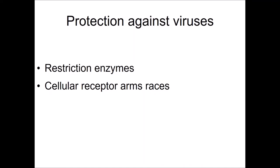Bacterial cells have protection against viruses. These include restriction enzymes, which we'll talk about later in the semester, as well as cellular receptor arms races, where the bacteria tries to hide from the virus and the virus has to adapt to find the bacteria.